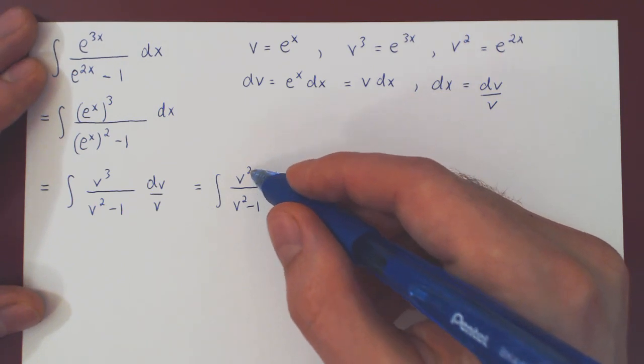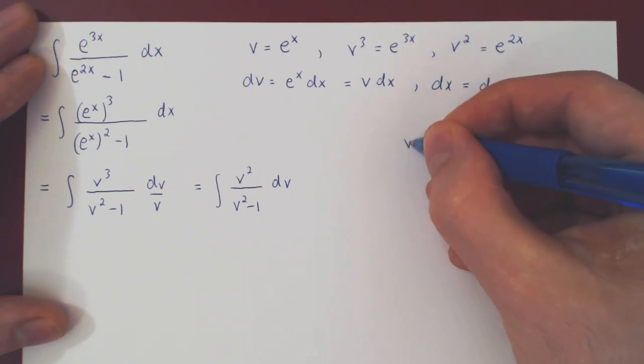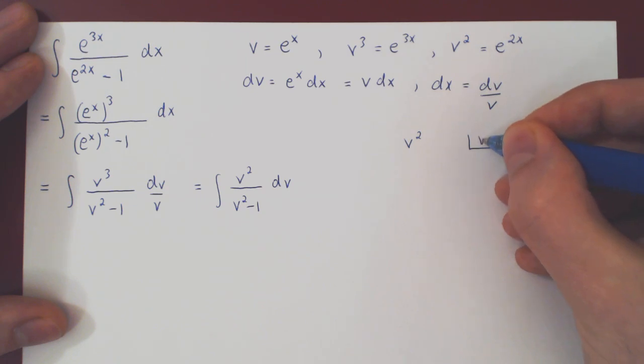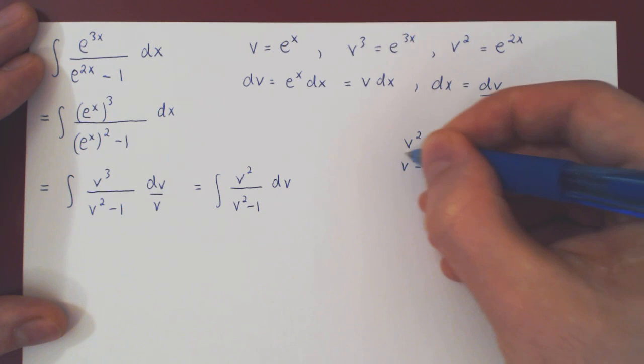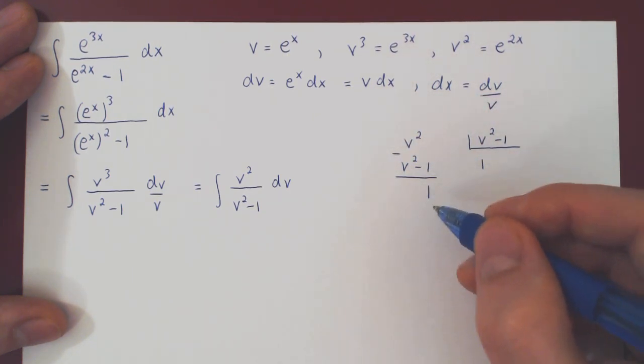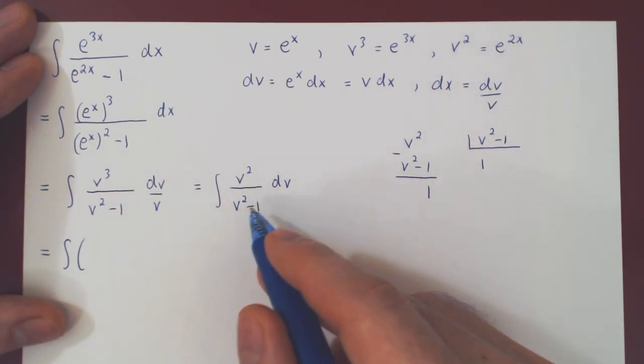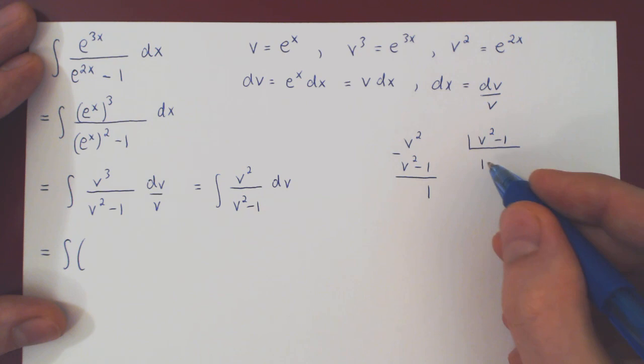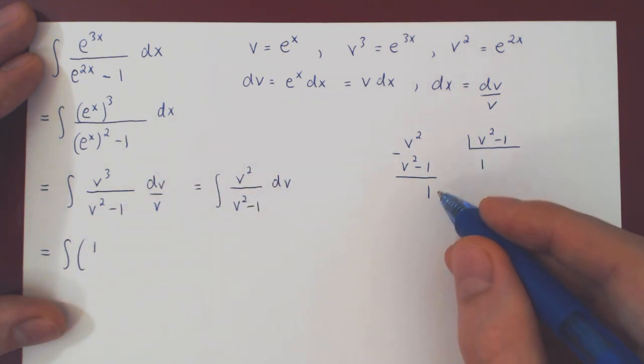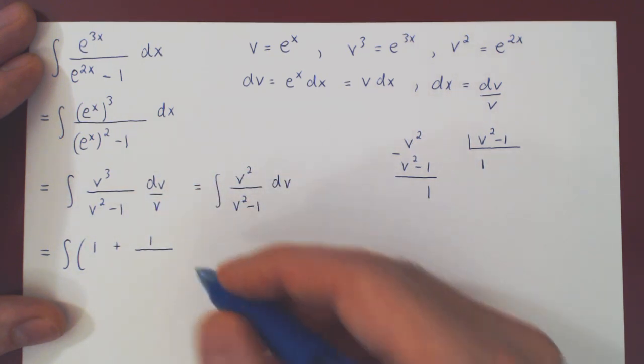Well, the first step of course is long division. As 2 is equal to 2, this will be a rather short long division. And we're done. Our remainder is a constant term, so of degree 0. 0 is less than 2. So this is the end result of our long division. So v squared over v squared minus 1 equals its quotient, 1, plus its remainder over the divisor, v squared minus 1.